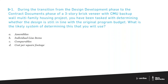Question one: During the transition from design development to contract documents for a three-story brick veneer with CMU backup wall multi-family housing project, you've been tasked with determining whether the design is still in line with the original program budget. What is the likely system for determining this? The options are: assemblies, individual line items, comparables, and cost per square footage.